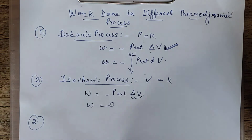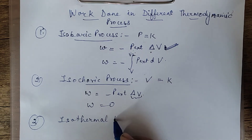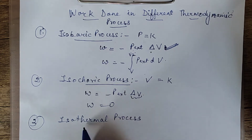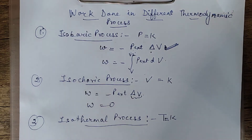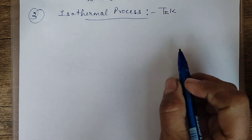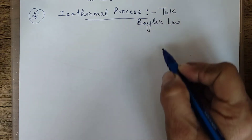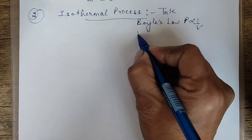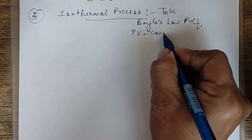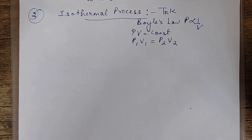Now let's consider the third type of process — isothermal process. Isothermal process is when the temperature is kept constant. We have studied this in Boyle's law, where we keep number of moles and temperature constant, giving a relation between pressure and volume: pressure is inversely proportional to volume, or P×V = constant, meaning P1V1 = P2V2. This relation will be required in calculating work done for isothermal processes.